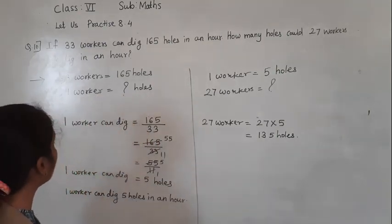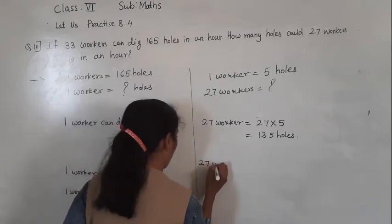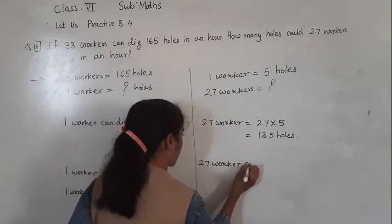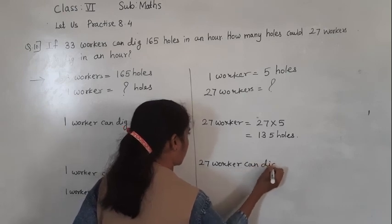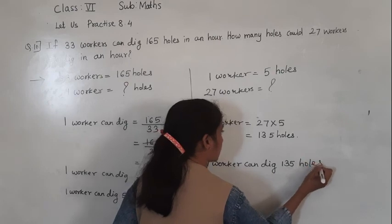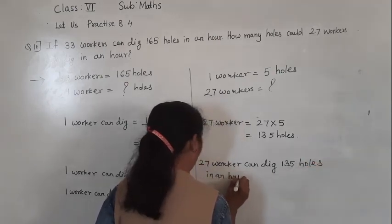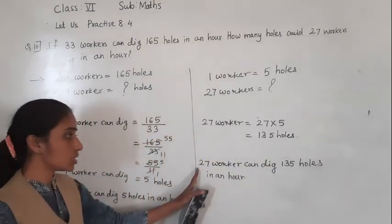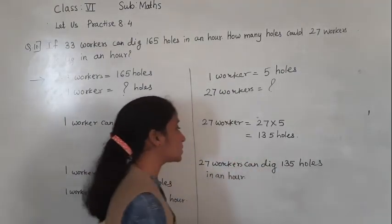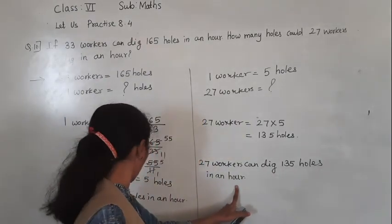So 27 workers can dig 135 holes in an hour.